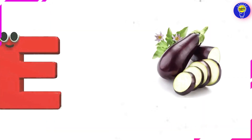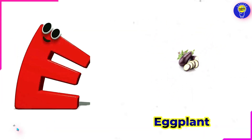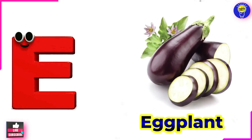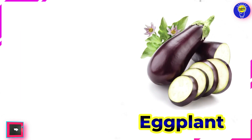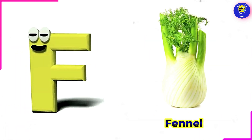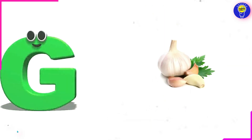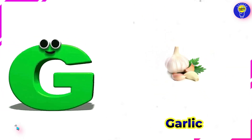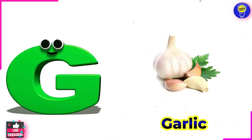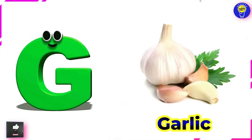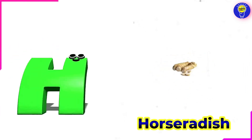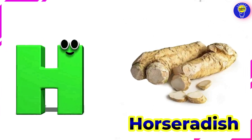E is for eggplant. F is for fennel. G is for garlic. H is for horseradish.